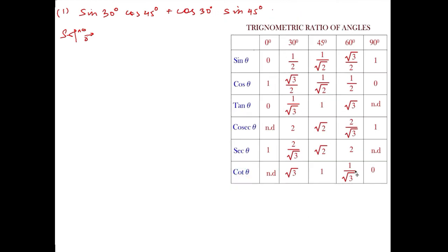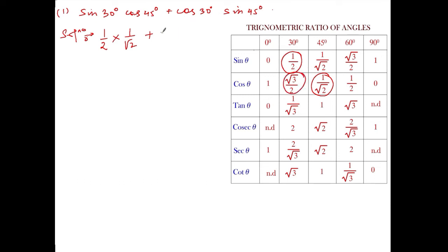Let me put the value of this question from this table. Sine of 30 — what is sine of 30? It is 1 by 2, so instead of sine of 30 you put 1 by 2. Sine 30 and cos 45 — there is no sign, that means it is multiplied. Cos 45, what is cos 45? It is 1 by root 2. Plus, what is cos of 30? Cos of 30 is root 3 by 2. So write down root 3 divided by 2, into sin 45 — what is sin 45? That is 1 by root 2.